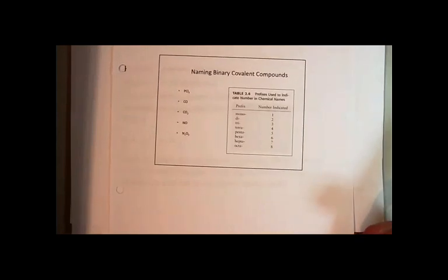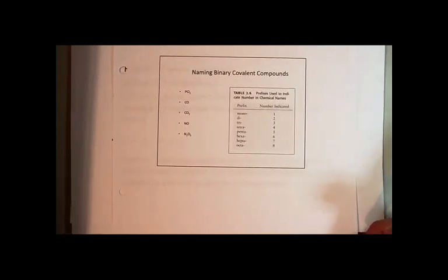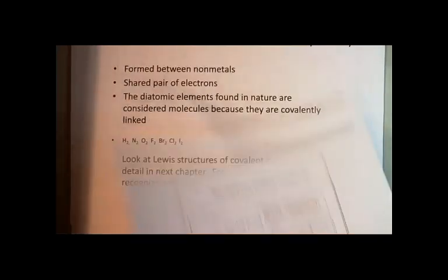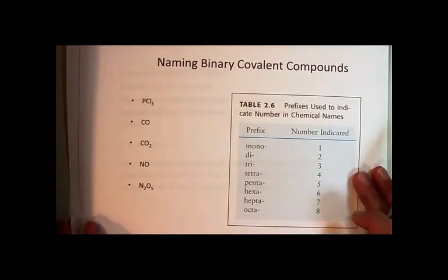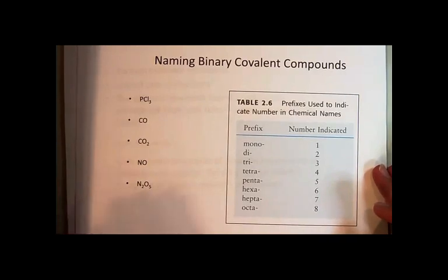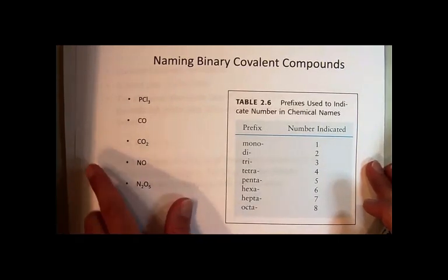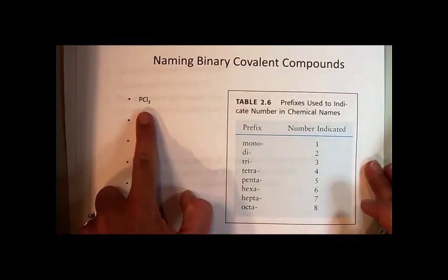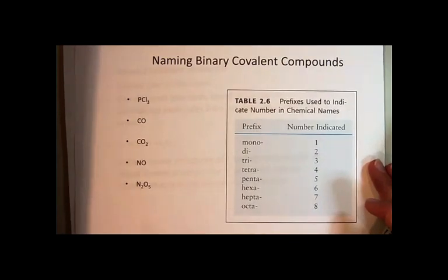First, we're going to look at naming binary covalent compounds. Binary means there's just two different types of elements in them. There's, for example, phosphorus and chlorine. That's binary. There's two different elements. And the way we name these covalent compounds, first of all, we recognize them as a covalent compound.